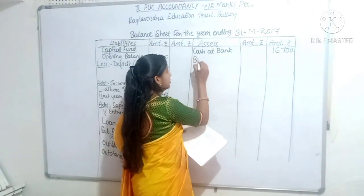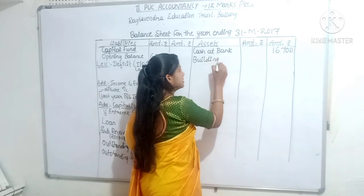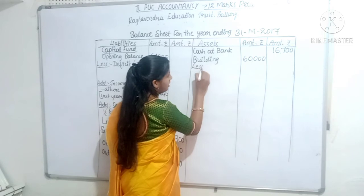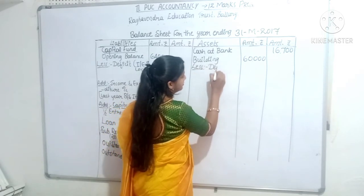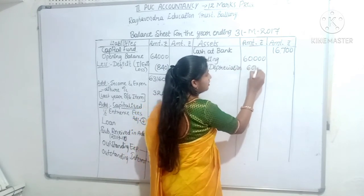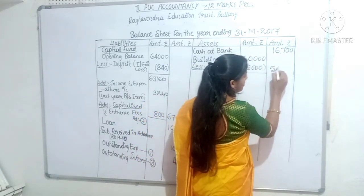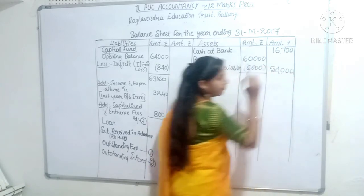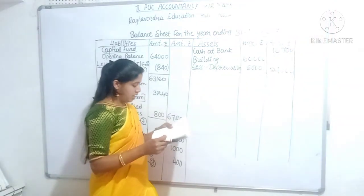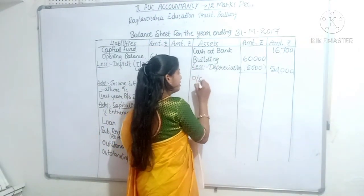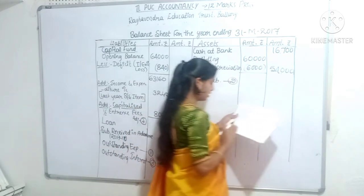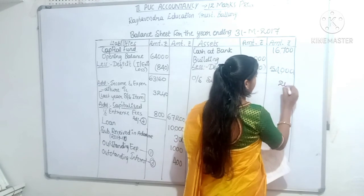Building Rs. 60,000 less depreciation Rs. 6,000: 60,000 minus 6,000 equals Rs. 54,000. Next entry: outstanding subscription - adjustment entry for outstanding current year subscription Rs. 200, Rs. 800.